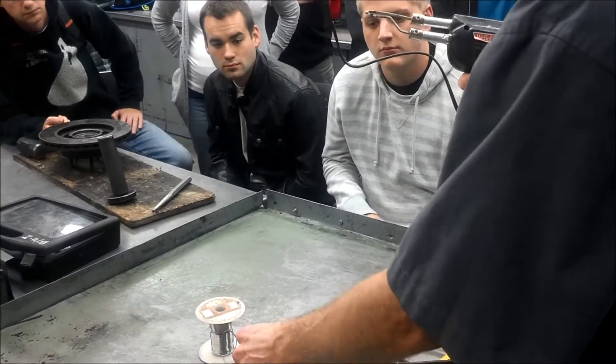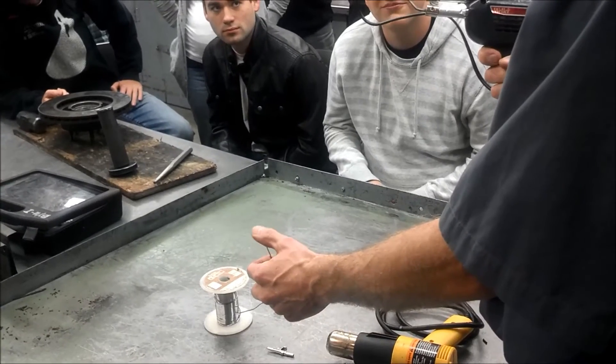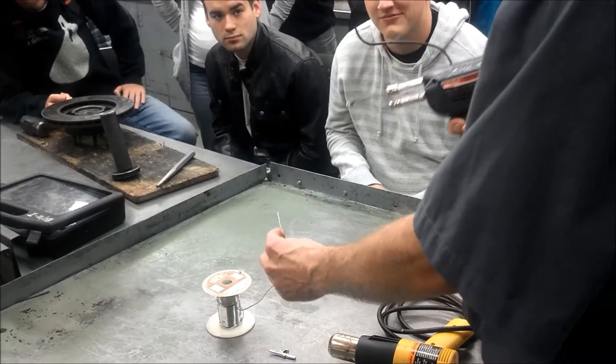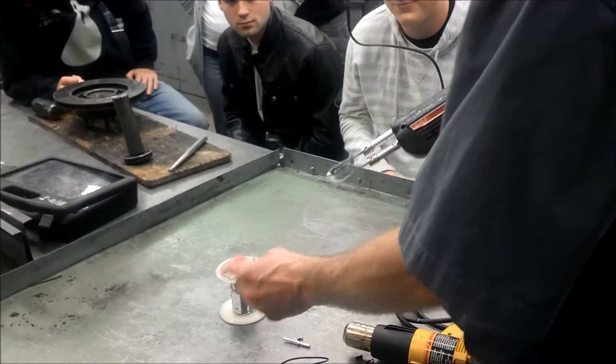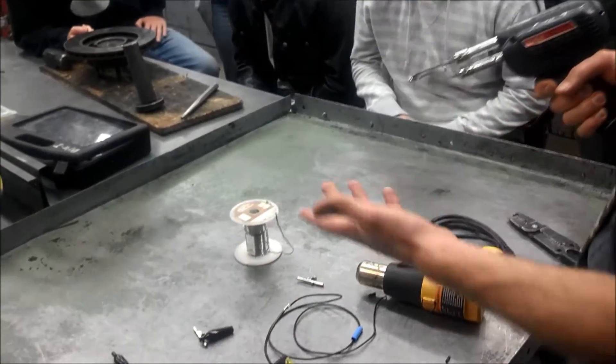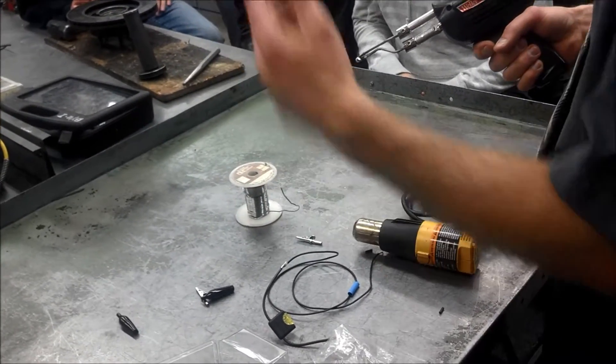Solder used to be made of lead and tin and a little bit of silver. Lead's kind of become less popular. So now our solders are mostly made of like silver, but it works almost the same way.